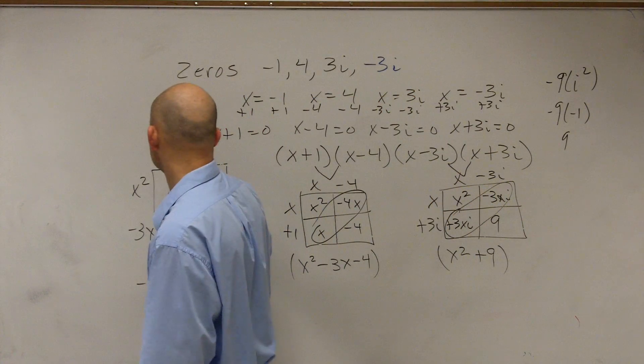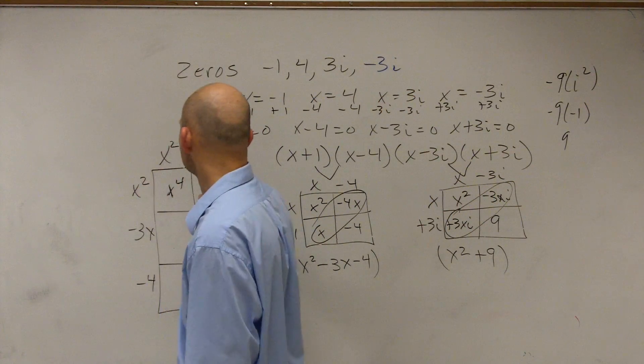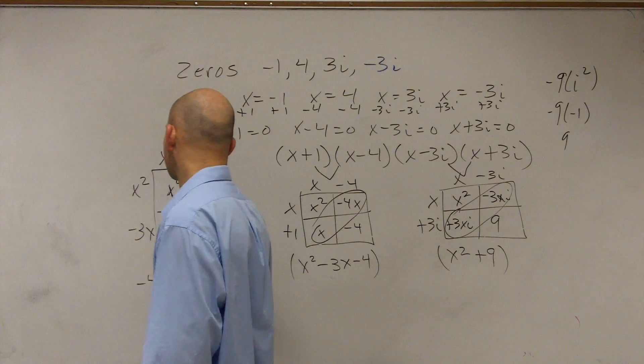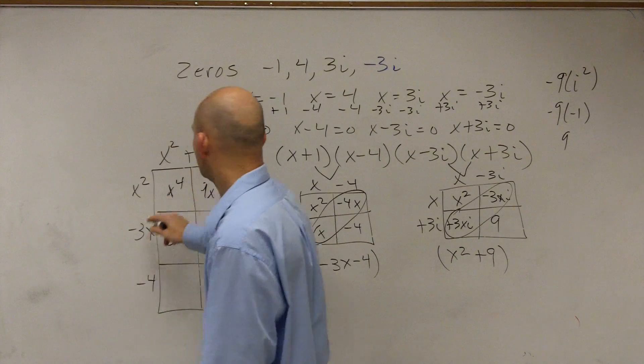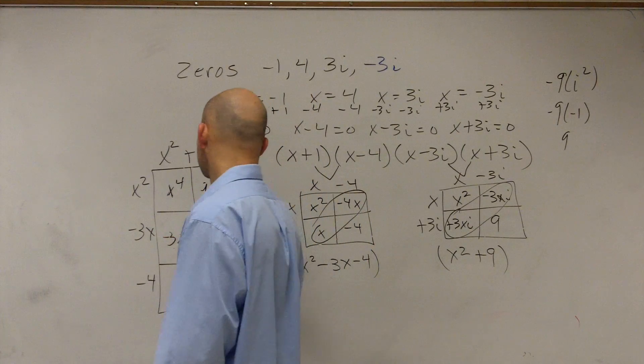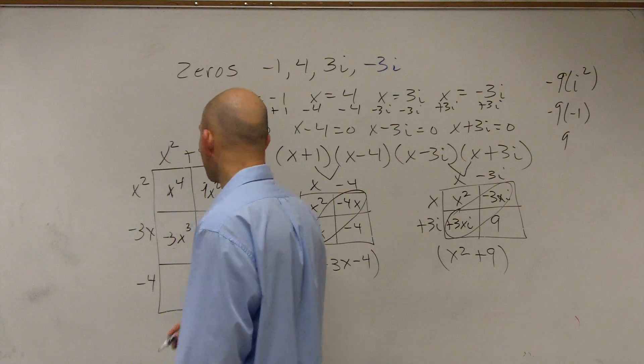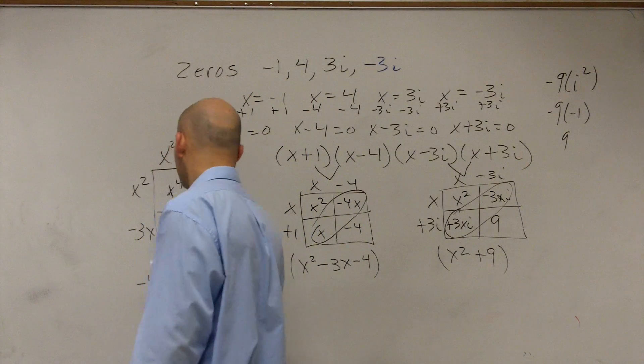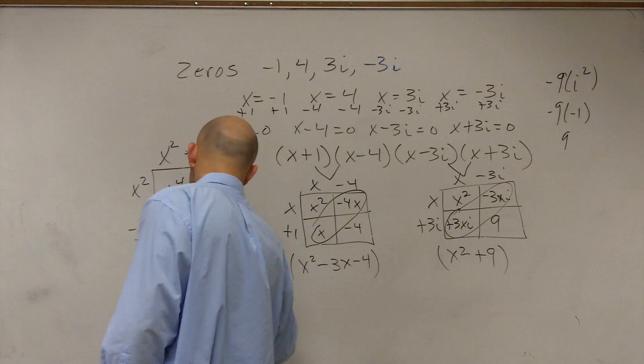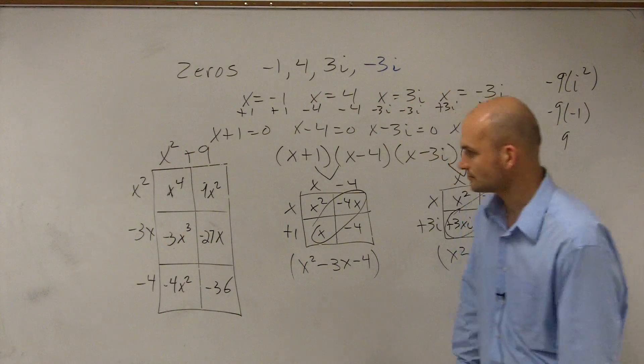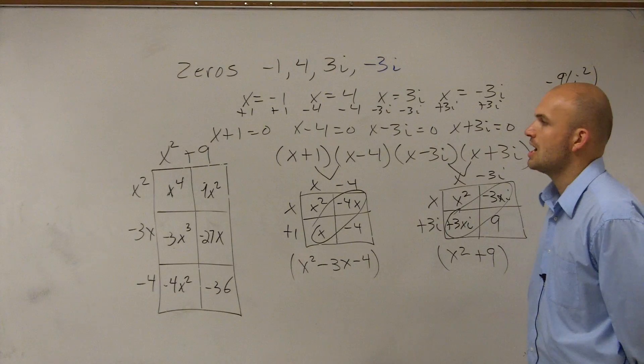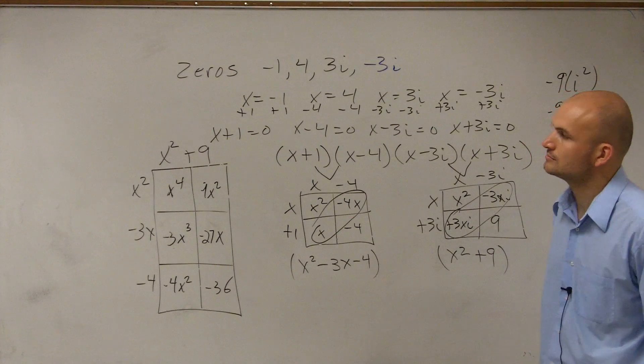X squared times x squared is x to the 4th. X squared times 9 is 9x squared. X squared times negative 3x is negative 3x cubed. Negative 3x times 9x is a negative 27x. X squared times negative 4 is a negative 4x squared. Negative 4 times 9 is a negative 36.